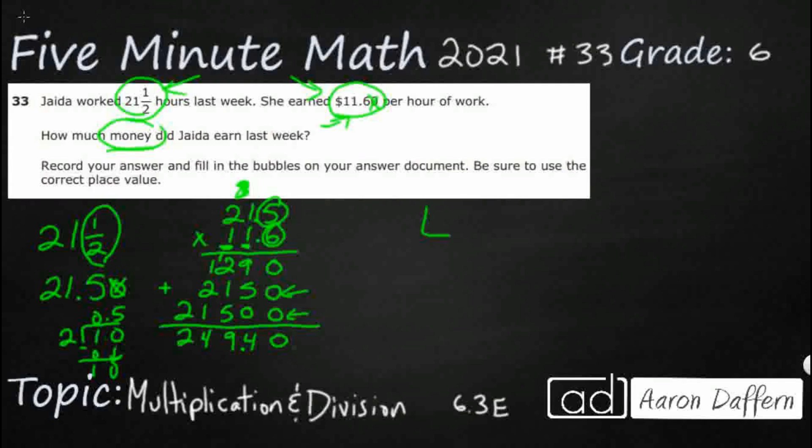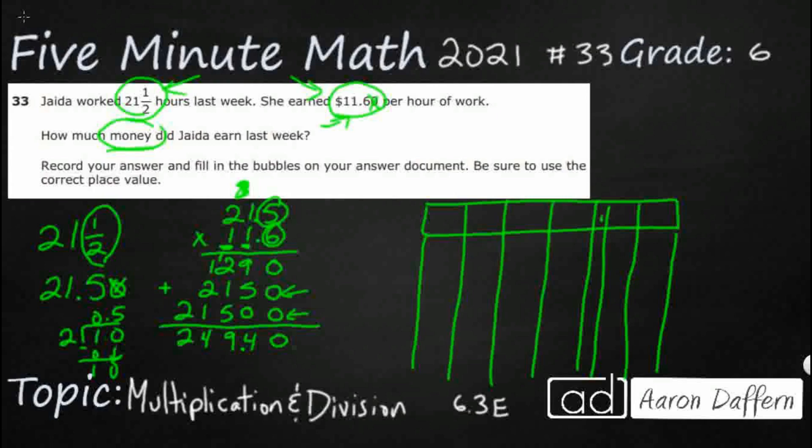And if we wanted to bubble this in, remember on the sixth grade, it looks kind of like this. You get your decimal here, two places behind the decimal, four places ahead of the decimal. So, you would simply put $249.40.